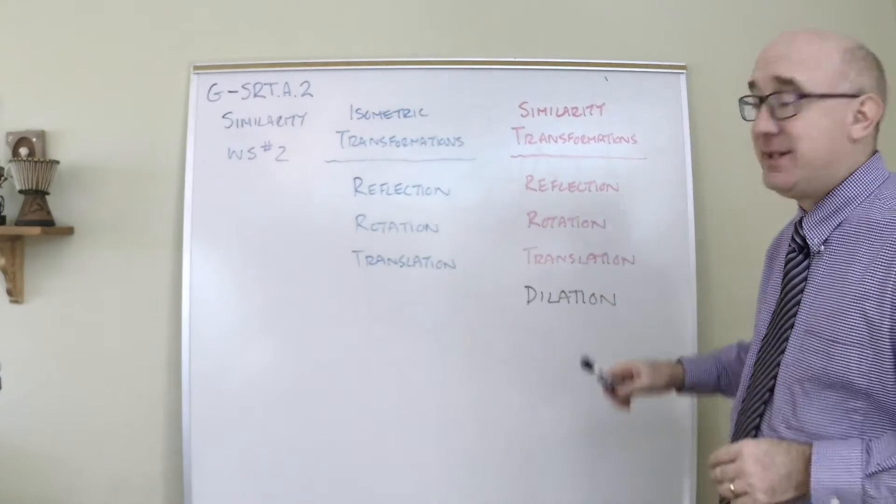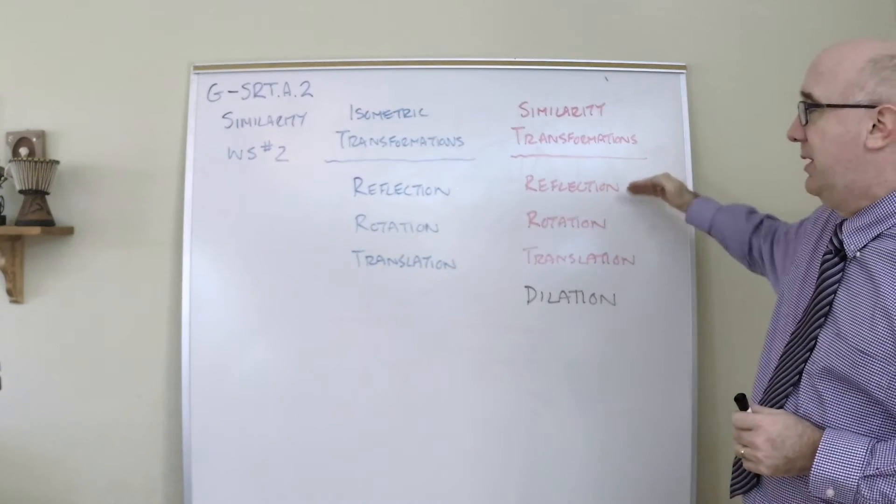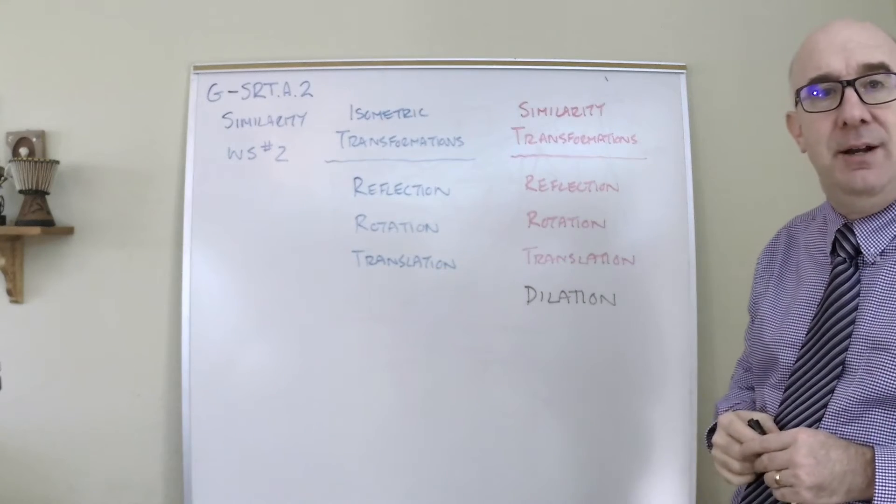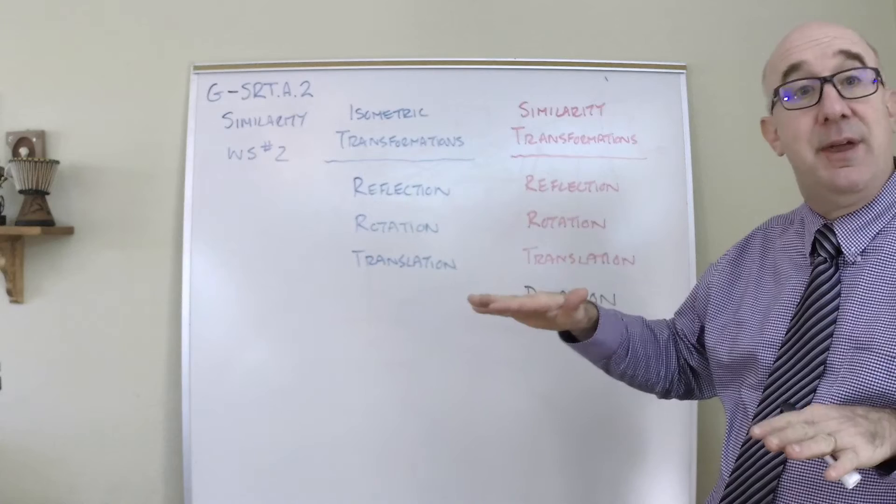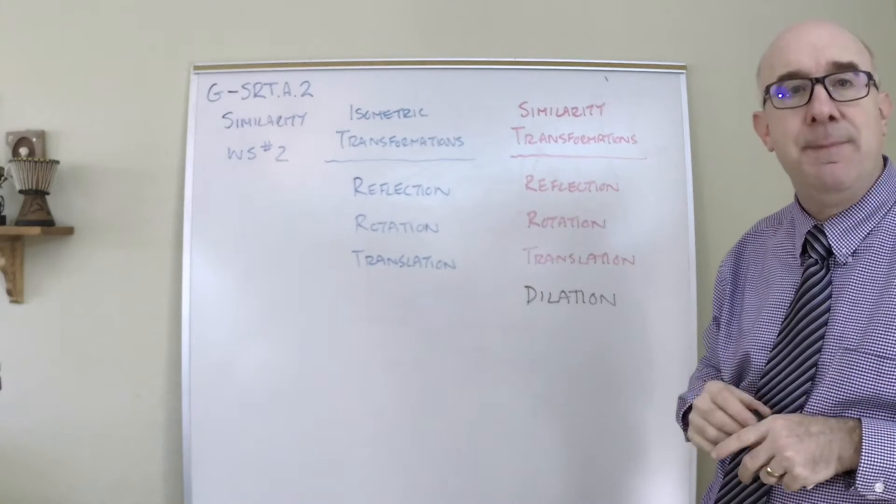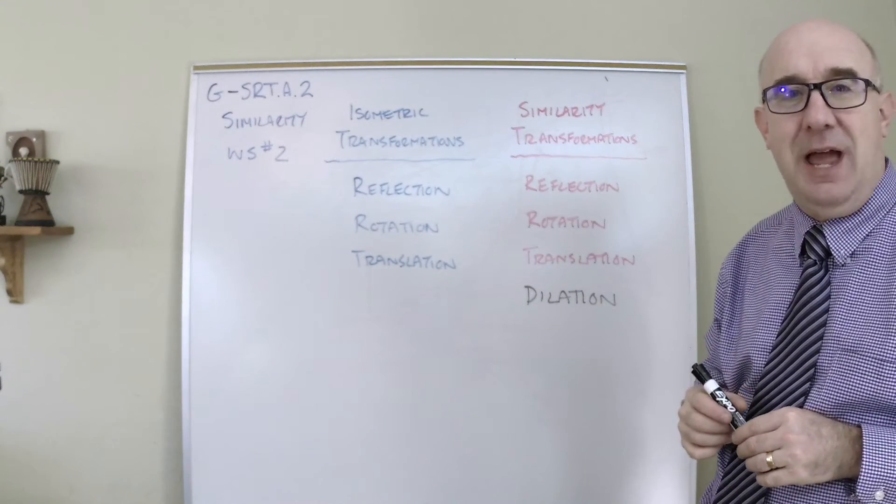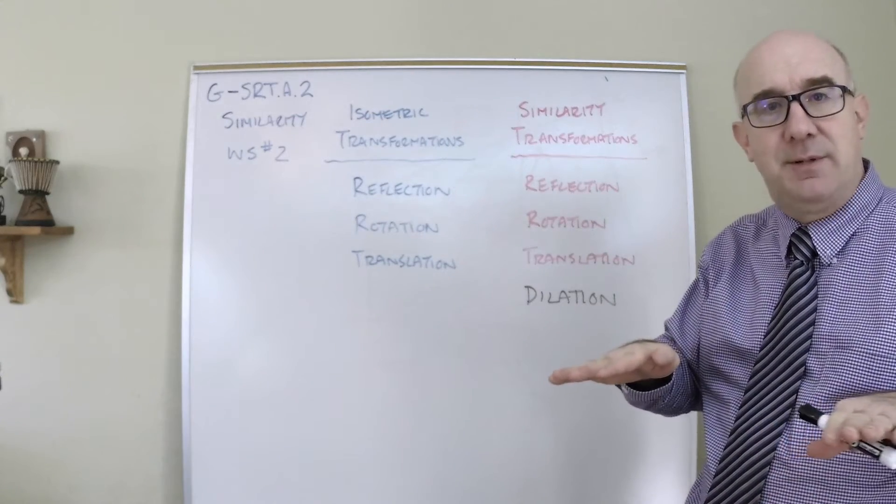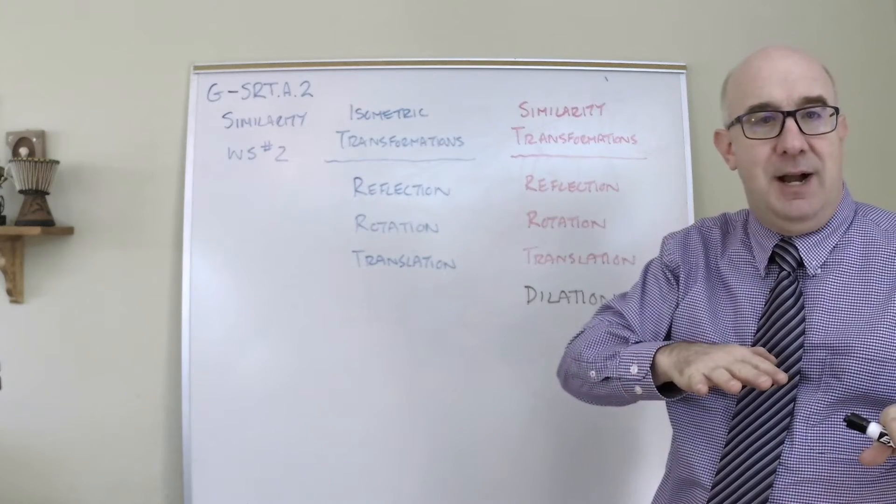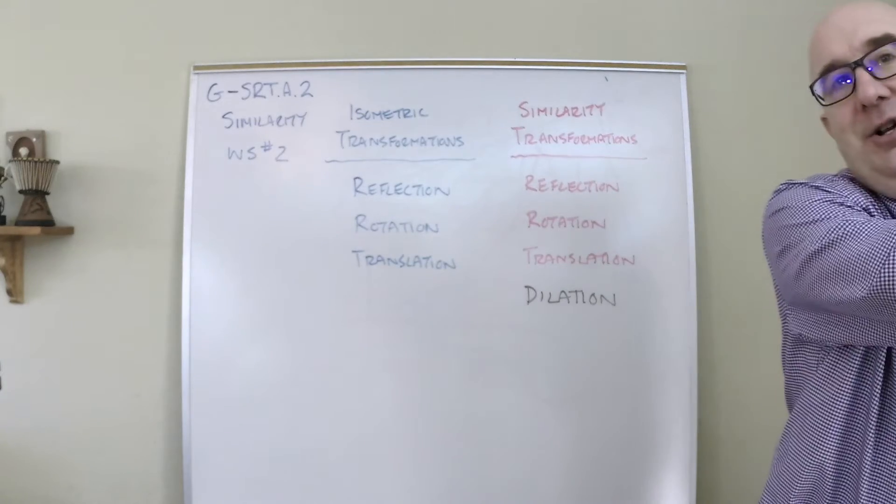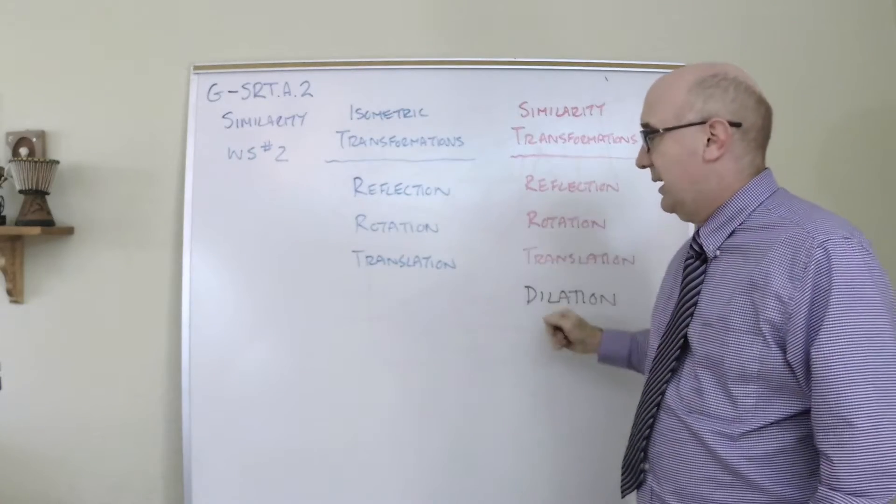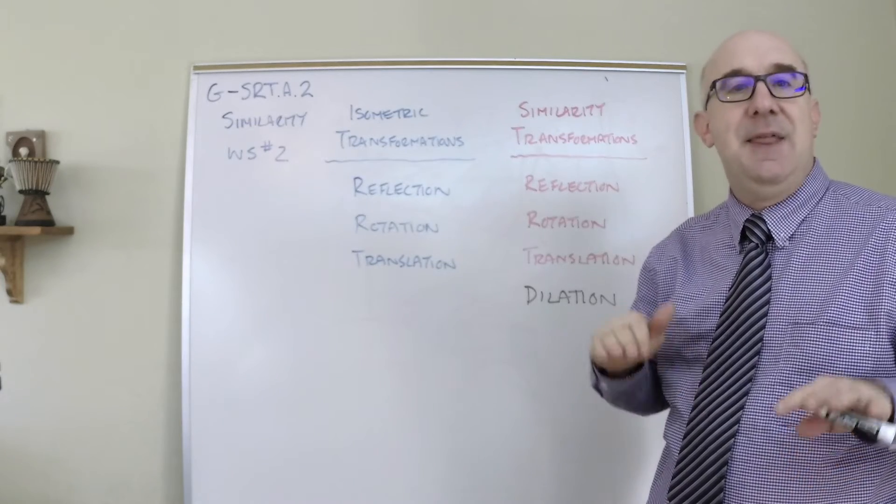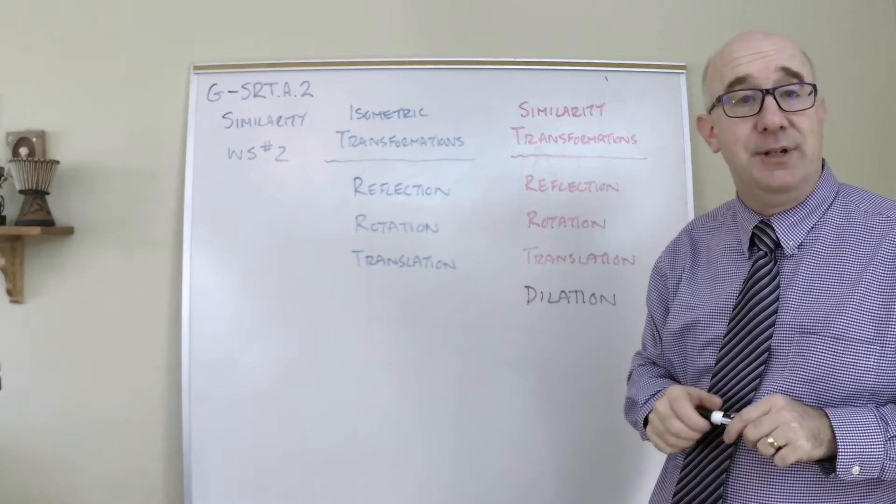When we talk about the similarity transformations, you'll notice three are repeats and we add one more. This allows us to then map one shape onto another that may be bigger or smaller. As long as it's within proportion, we can do that. The reason these are included is they create a one-to-one mapping. So sometimes maybe we have to rotate the shape so it's at the right angle and then dilate it onto the other one. And so these are included in the list because we need to orient the shape or locate the shape correctly and then create the dilation to map one onto the other.